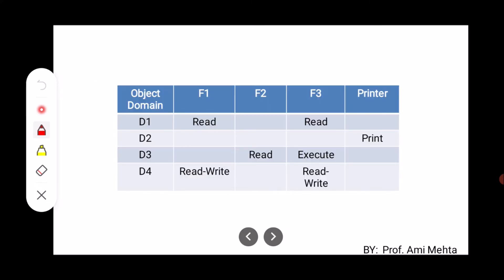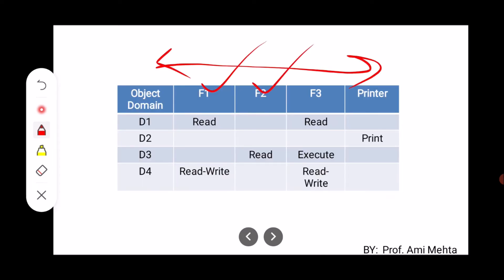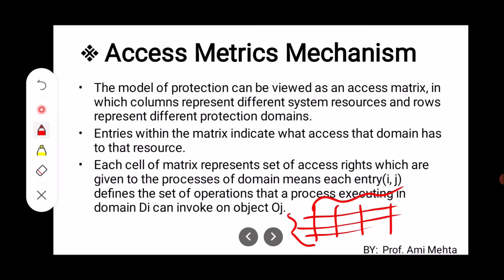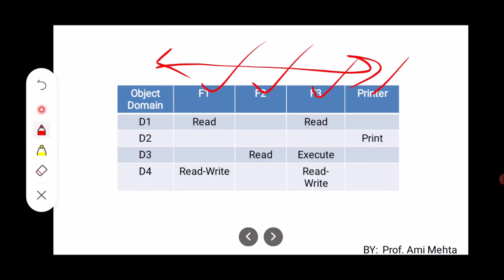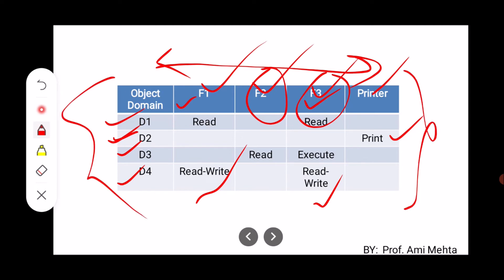Looking at the table: columns represent different system resources — F1, F2, F3, and Printer — and rows represent different protection domains D1, D2, D3, D4. Domain D1 can read files F1 and F3 only. Domain D2 can print. Domain D3 has the privilege to read file F2 and execute file F3. Domain D4 has the privilege to read and write file F1, and read and write file F3.